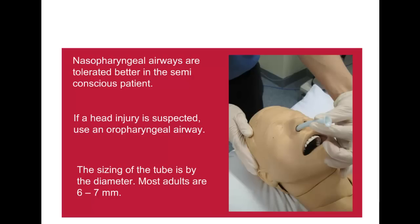Nasopharyngeal tubes are sized in millimetres according to their internal diameter, with length increasing in accordance with diameter. Sizes 6–7mm are suitable for most adults. Inadvertent insertion of a nasopharyngeal airway through a base of skull fracture and into the cranial vault is possible but extremely rare; in the presence of a known or suspected basal skull fracture, an oral airway is preferred. To insert a nasopharyngeal airway, check the patency of the right nostril. Some packaging supplies a safety pin that needs to be inserted into the flange prior to insertion, designed to prevent the airway disappearing beyond the nares. Lubricate the airway thoroughly using water-soluble jelly.